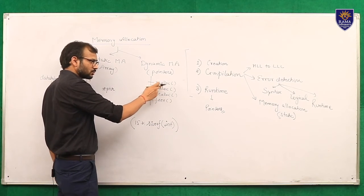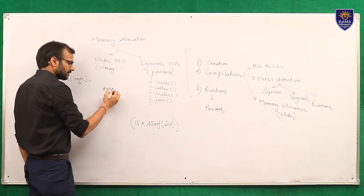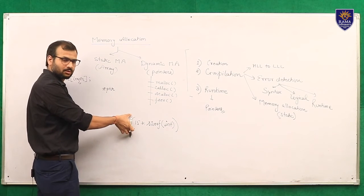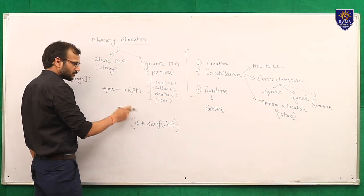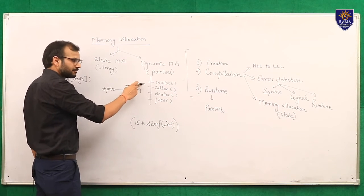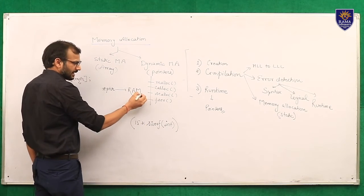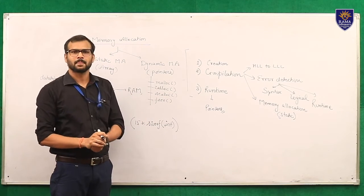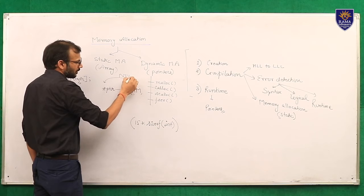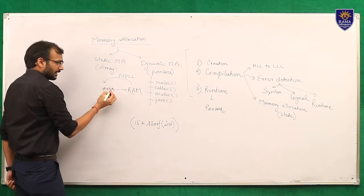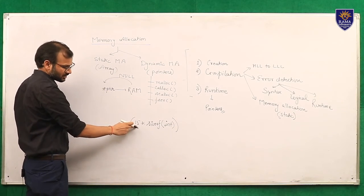Malloc and calloc are system-defined functions acting as messengers. The pointer variable calculates the total memory required and sends this request to the RAM using malloc. RAM will verify whether the required size is available. If that size is not available, RAM will return a null value to the pointer variable, which means the RAM is not capable of storing that number of elements.